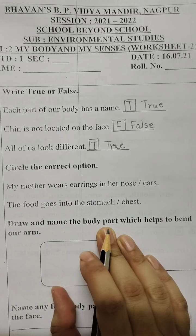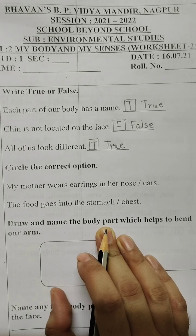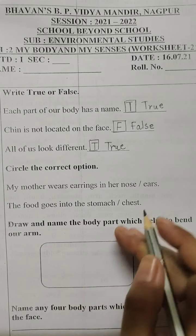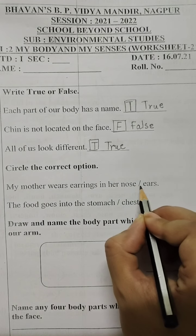Now students, circle the correct option. My mother wears earrings in her ears. Earrings, so ears.